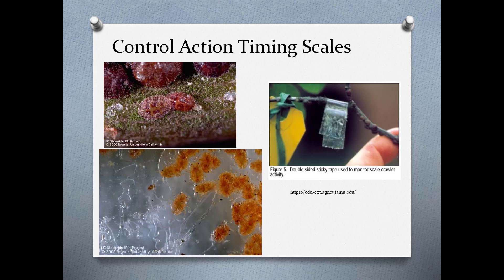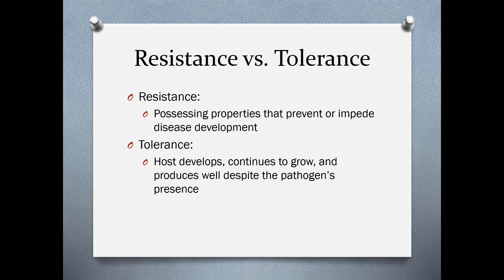You also want to time your treatments carefully. Scale insects have piercing, sucking mouthparts and a protective covering that keeps them attached. You can't effectively treat them with chemical control when they are at the mature stage shown in the upper left picture. What you want to do is treat them during the crawler stage, which is the first nymphal instar, when they have functional legs and are able to move about. To know when the timing is right, use double-sided sticky tape on your plants—when crawlers appear, that's when you apply pesticide.